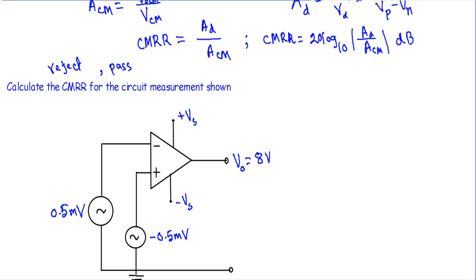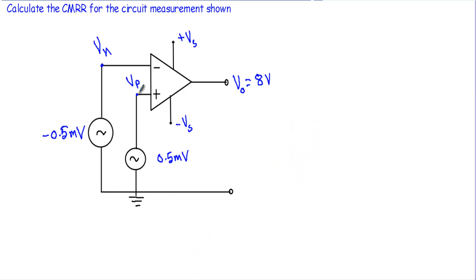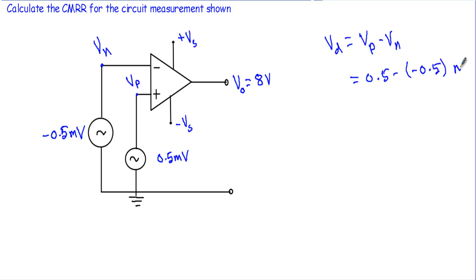The common mode rejection ratio determines a circuit's ability to reject a common signal and to pass a signal when the inverting and non-inverting terminal voltages are not equal. Now let me show you an example. For the CMRR I will have two circuits. In the first circuit, I am applying voltage VP at the non-inverting terminal and voltage VN at the inverting terminal, where VP is different from VN — this is our differential input circuit. Here VD = VP minus VN, where VP equals 0.5 millivolt and VN equals minus 0.5 millivolt, giving VD equal to 1 millivolt.